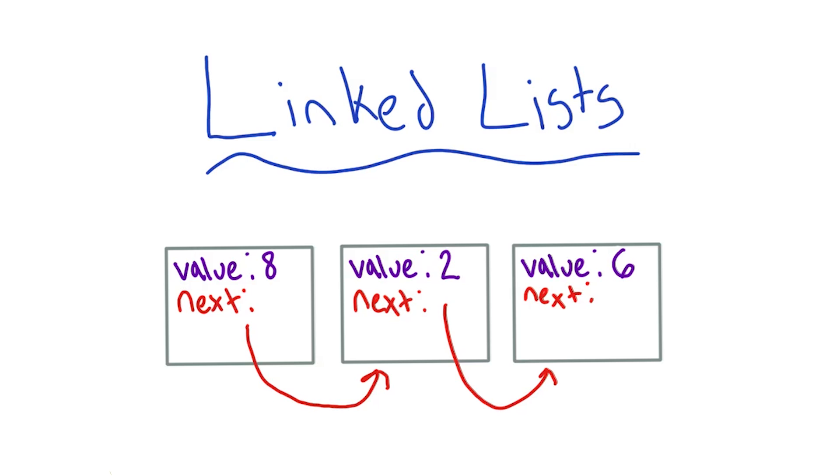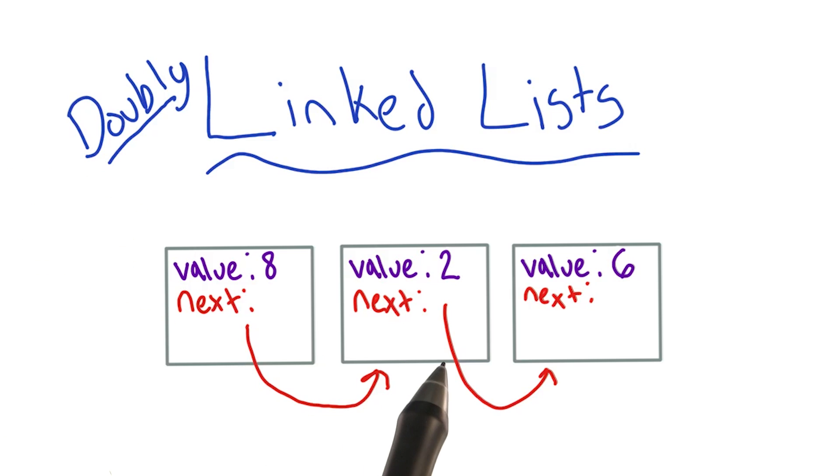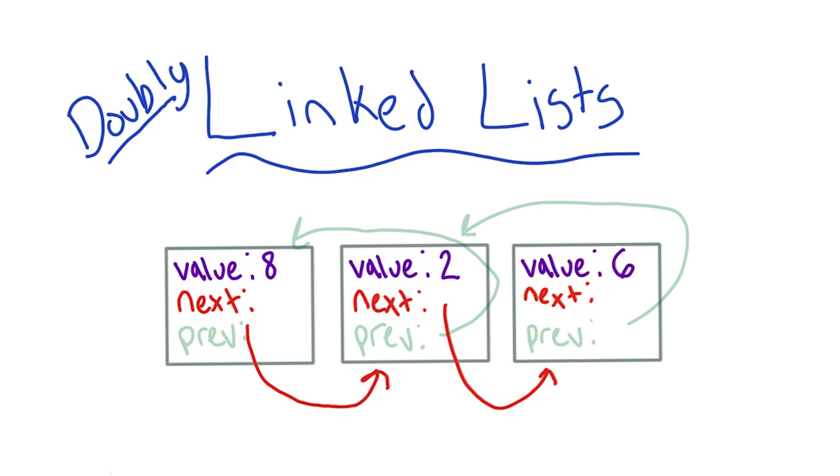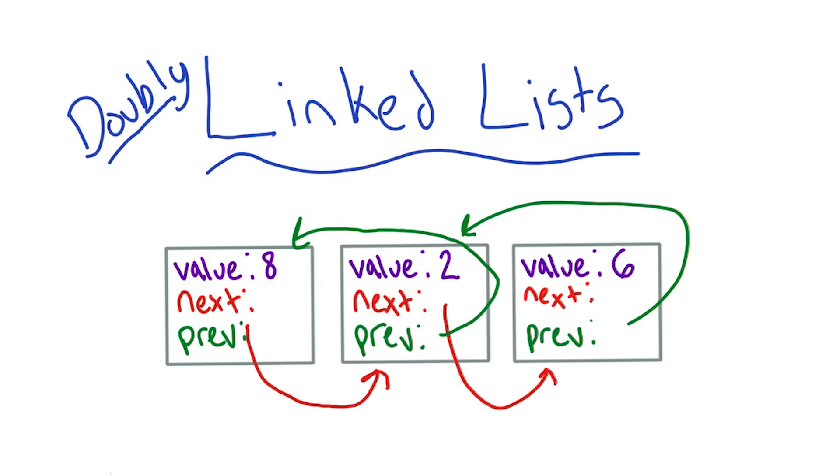Removing an element is going to look pretty similar, so I'm not even going to go over that now. There's also something called a doubly linked list, where you have pointers to the next element and the previous element. The rules are pretty similar for a doubly linked list, except you can traverse the list in both directions now.